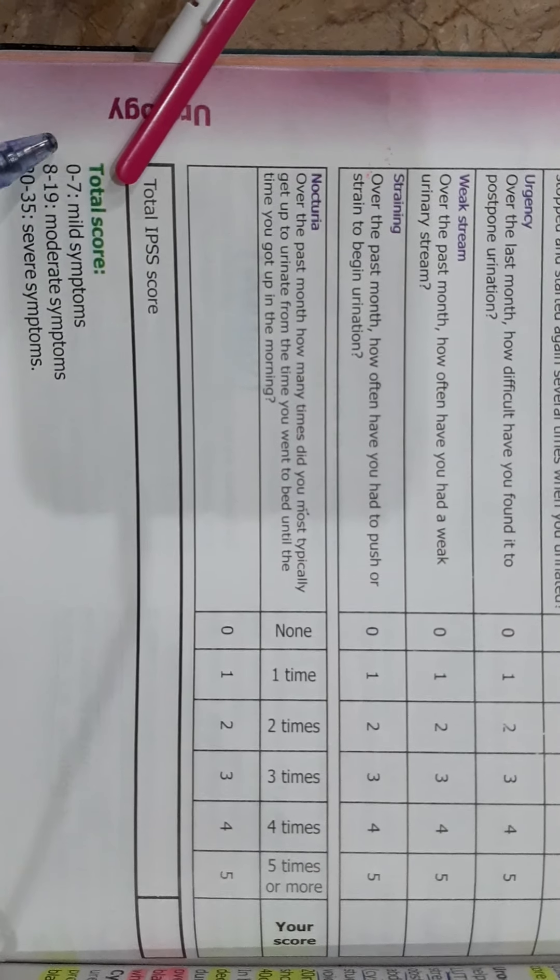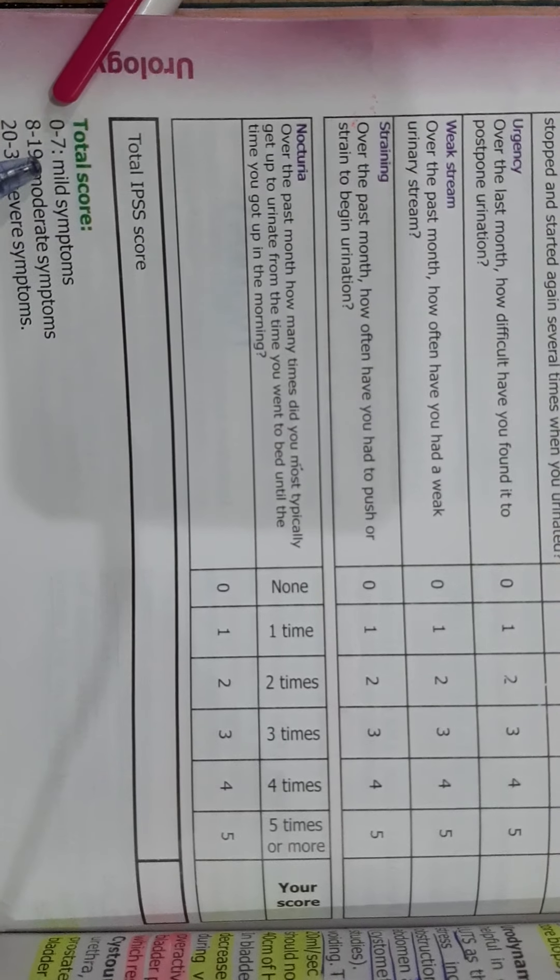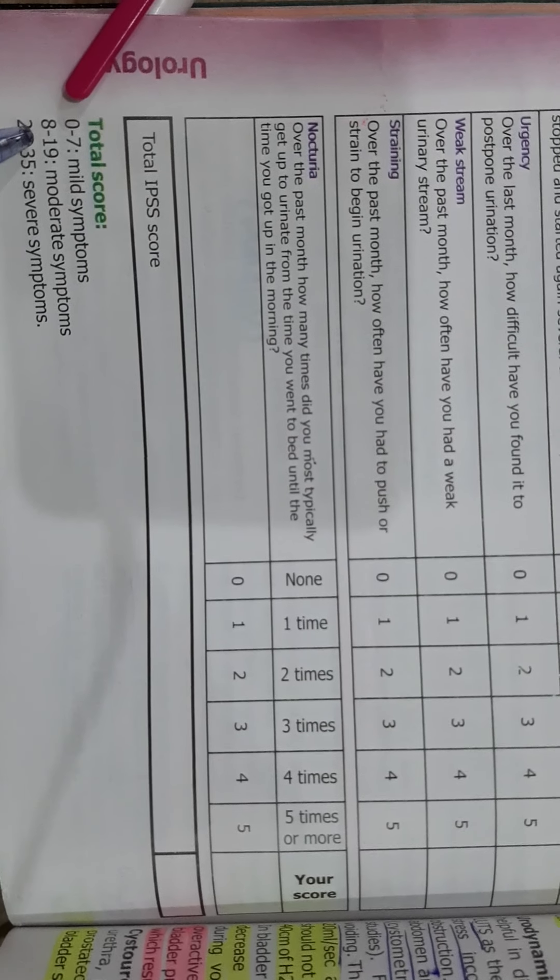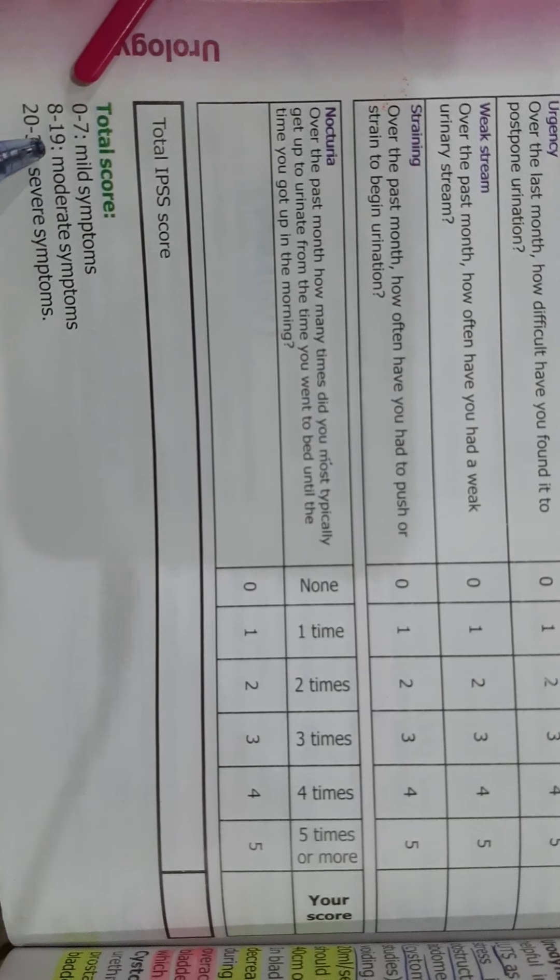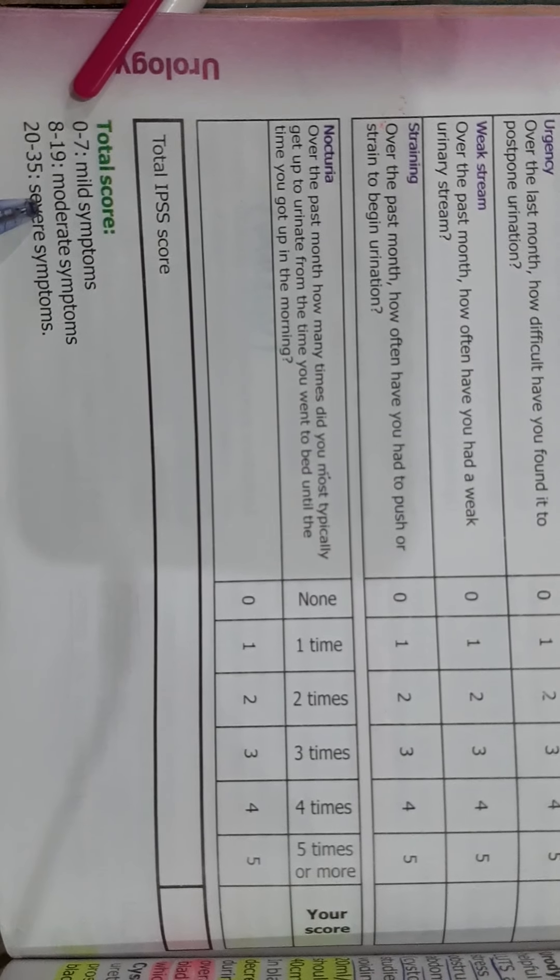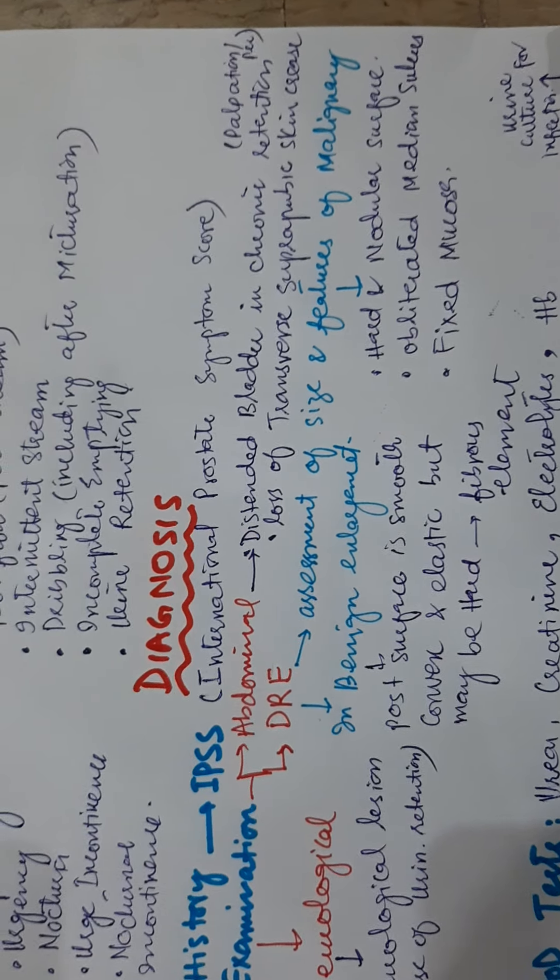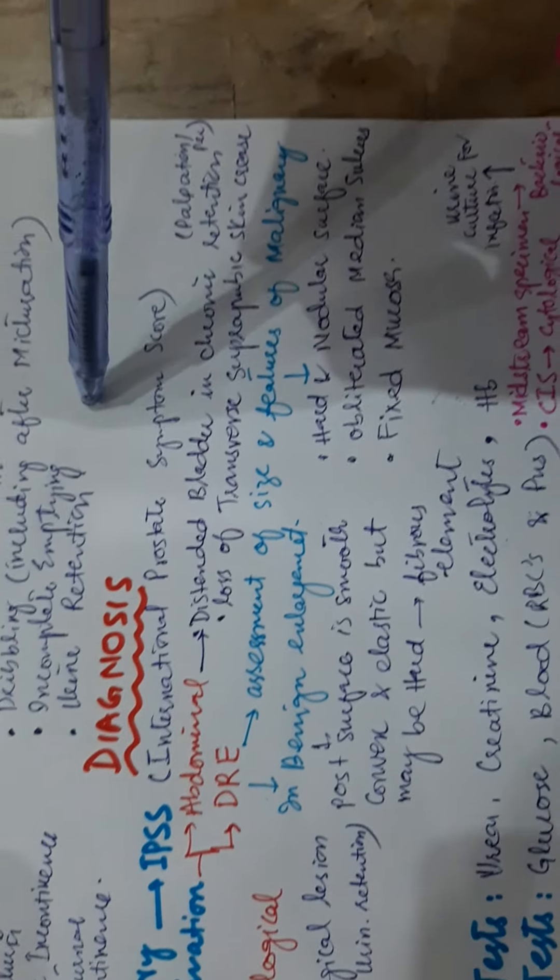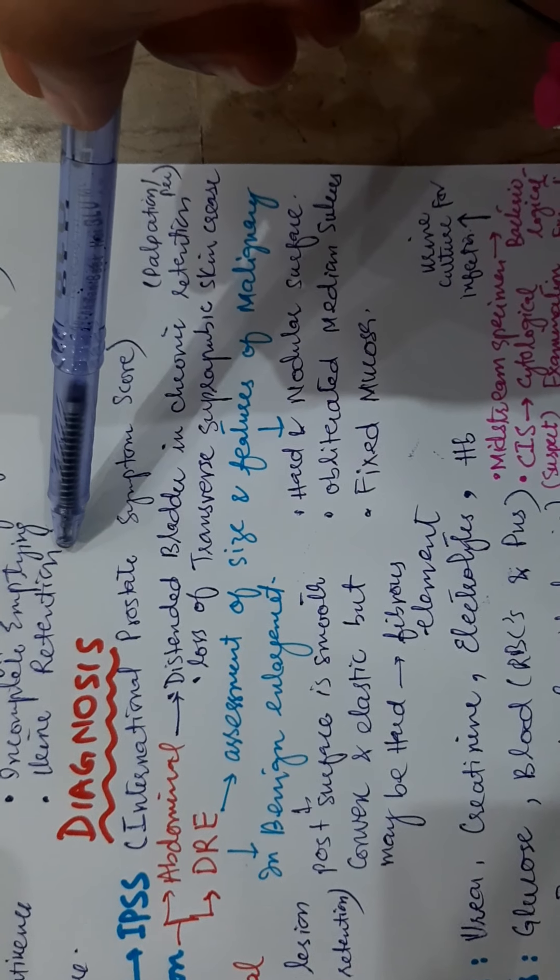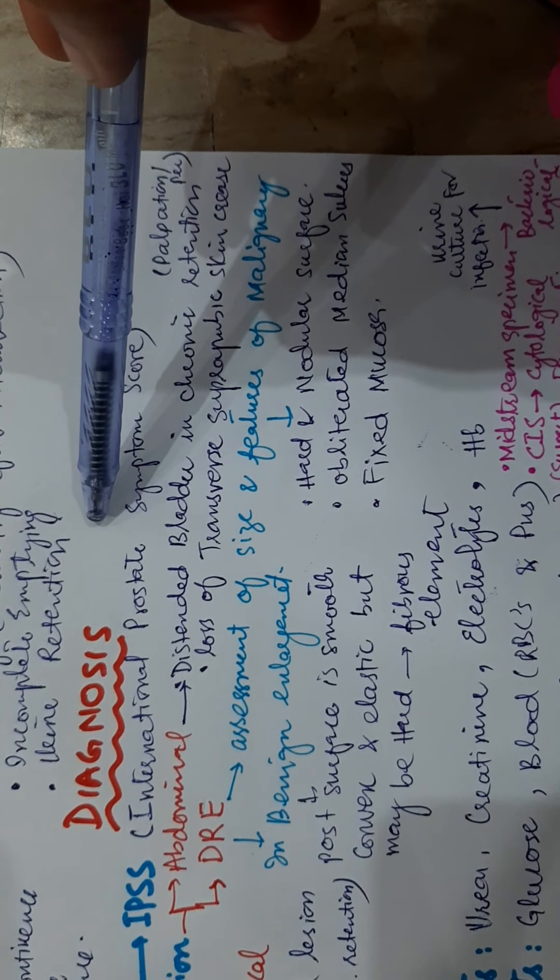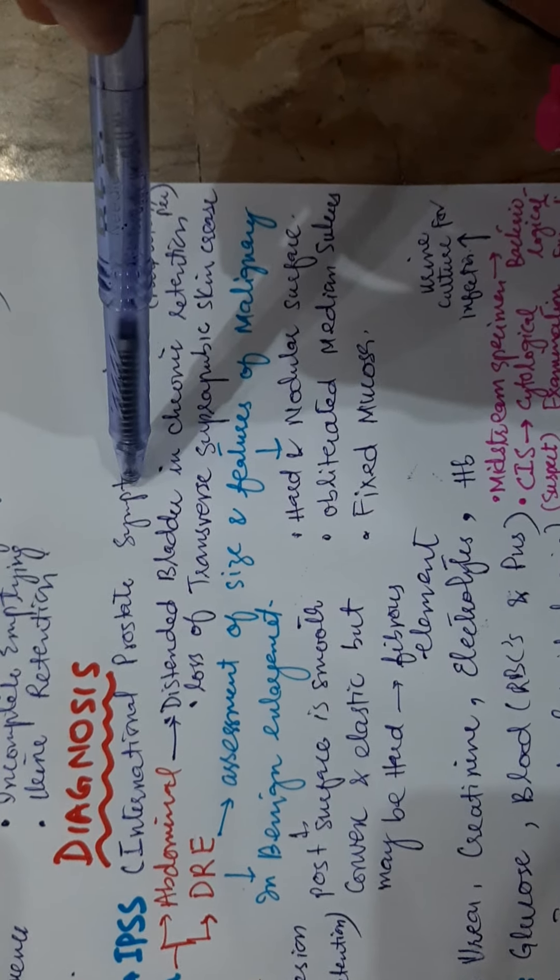If total score is 0 to 7, it means there are mild symptoms. If the score is between 8 to 19, it shows moderate symptoms, and 20 to 35 score represents severe symptoms. This IPSS score gives information about the severity of symptoms at the outset and changes over time and following intervention. The IPSS assessment should include an assessment of quality of life, which is a reflection of the degree of bother caused by a patient's symptoms.